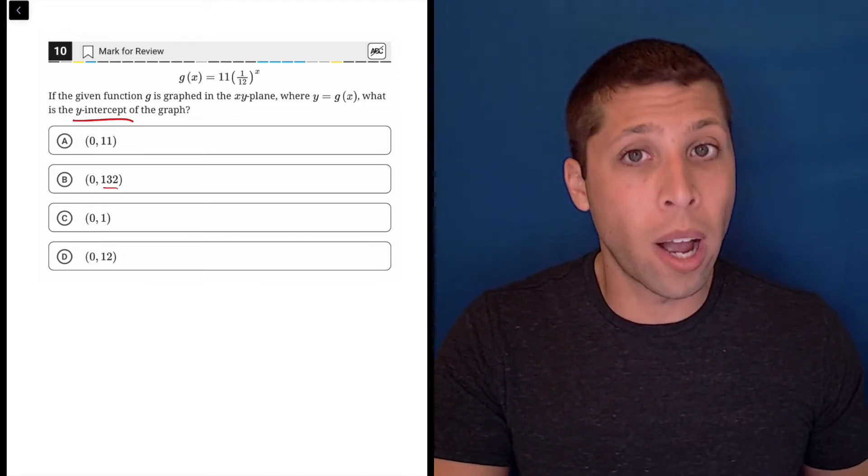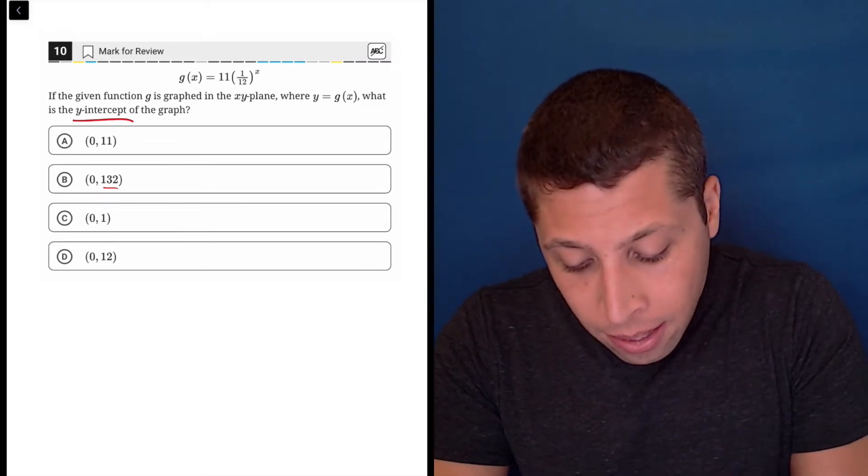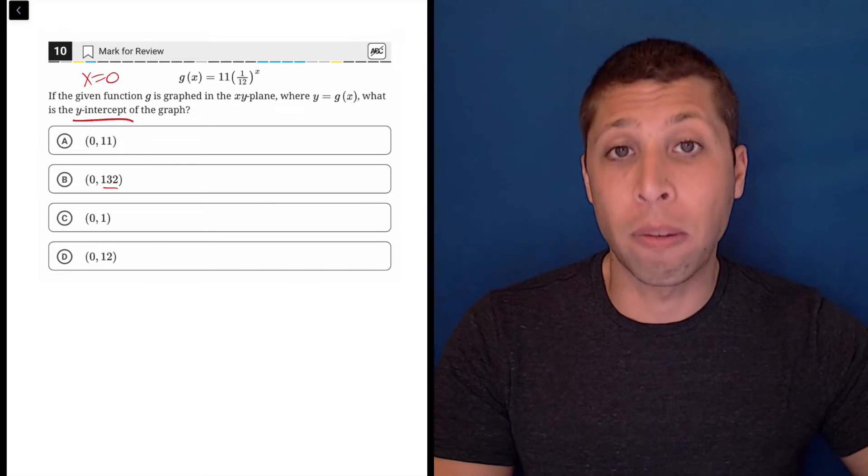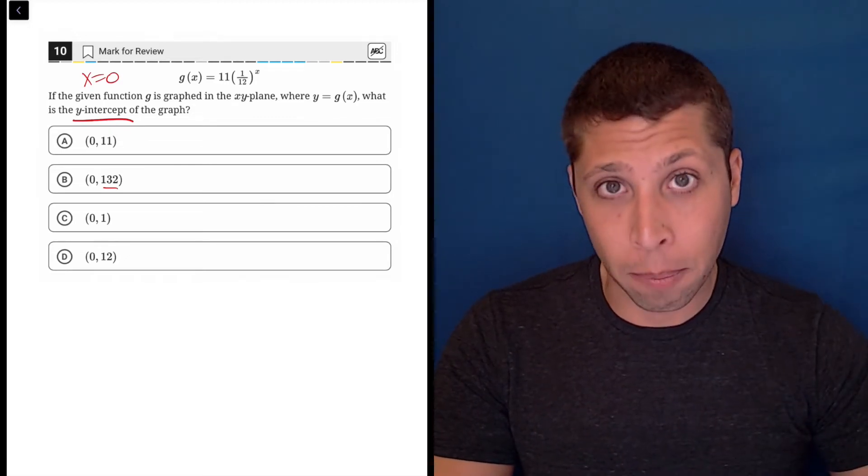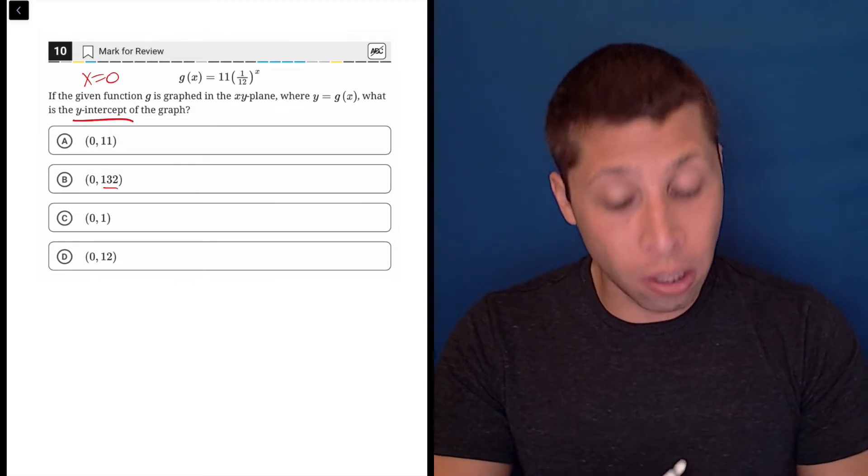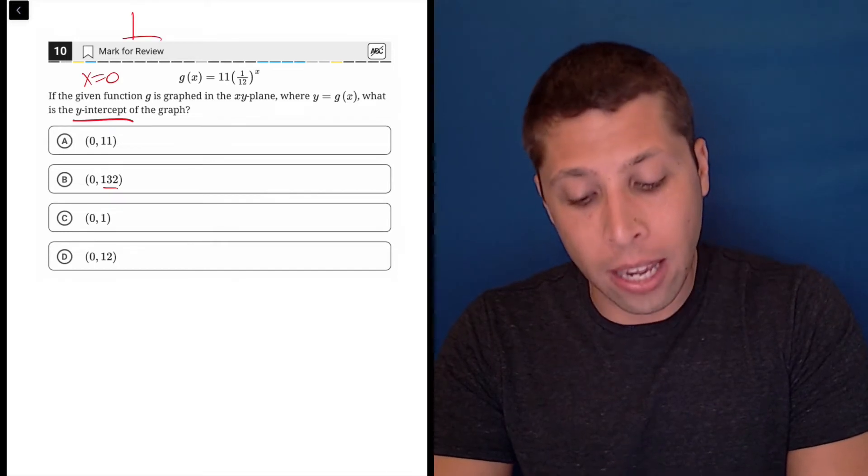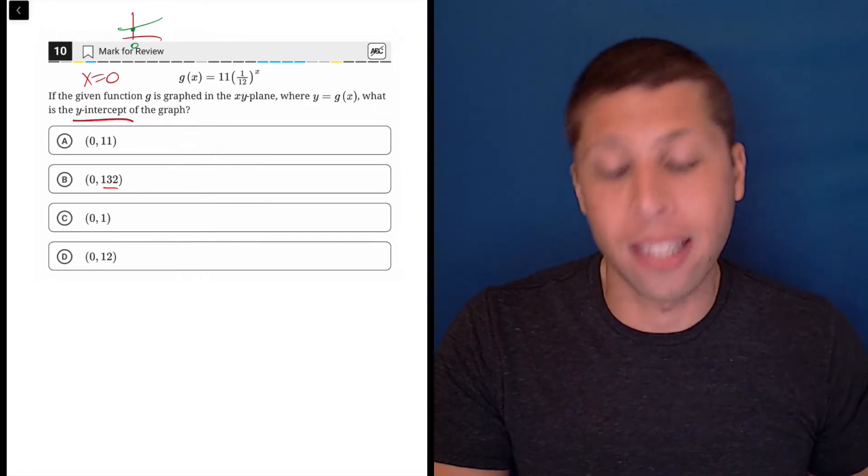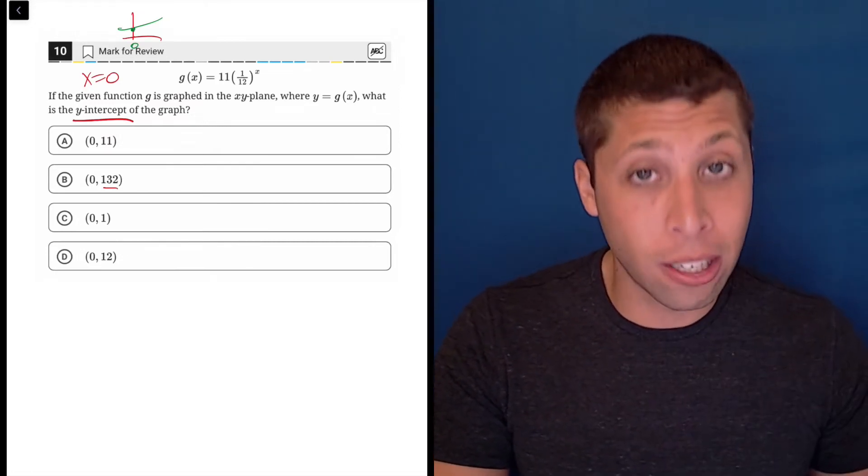If we know something is a y-intercept, it means that x is equal to zero. This is a definition you have to memorize. Y-intercepts have an x-coordinate of zero because it's where the line crosses the y-axis. So what's my x? It's zero at that point. This is just definitional.